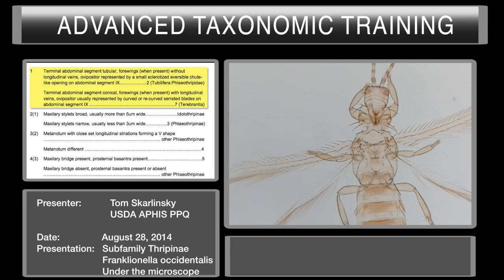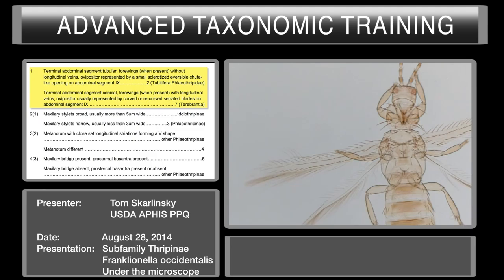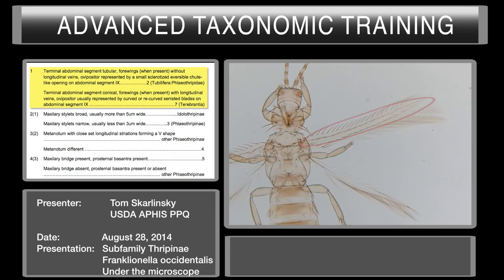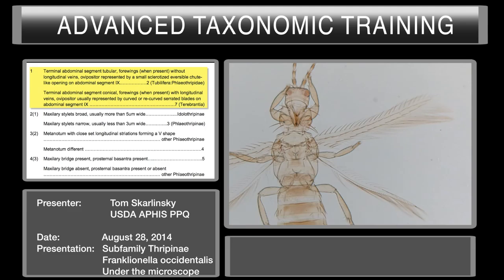Let's go ahead and check out the terminal abdominal segment. We want to see, is it conical? Or is it tube-like, like a PVC pipe? Looks more conical to me. So let's go ahead and pretty much establish that the tenth abdominal segment is conical. So we're at Terebrantia.